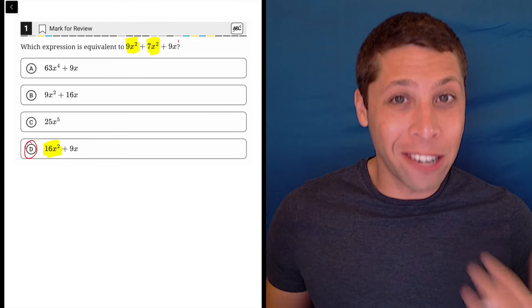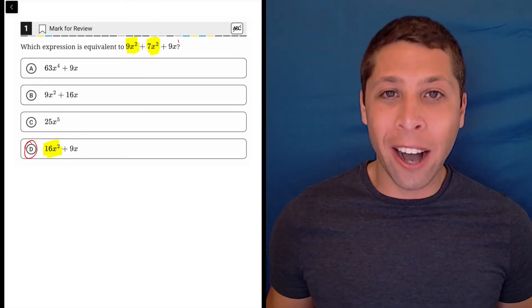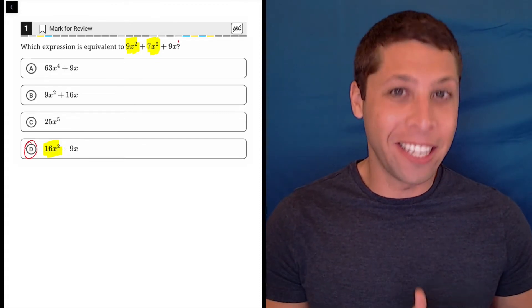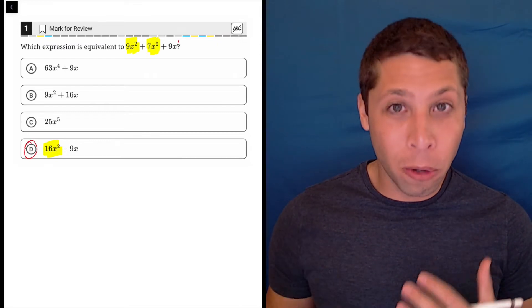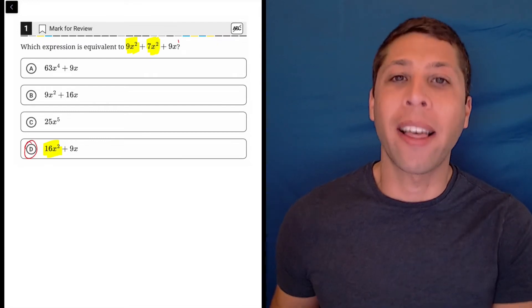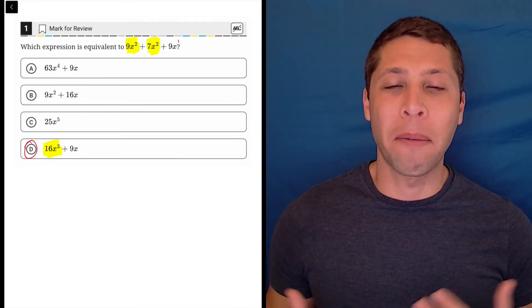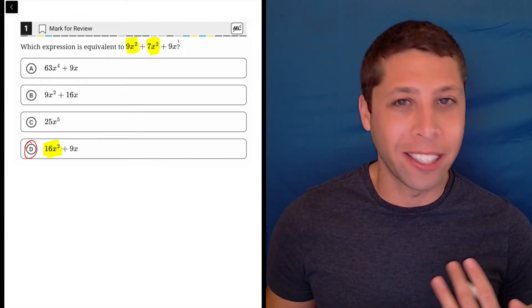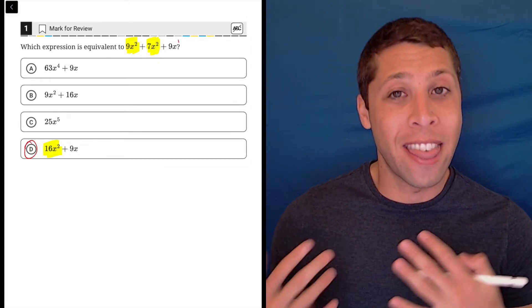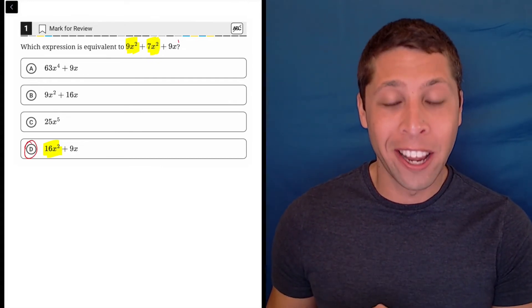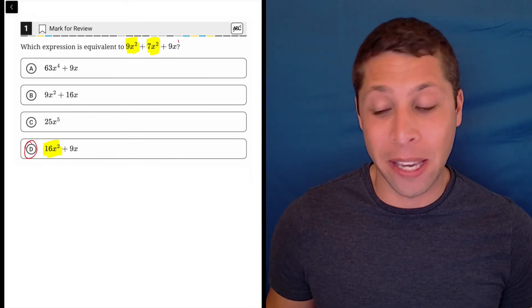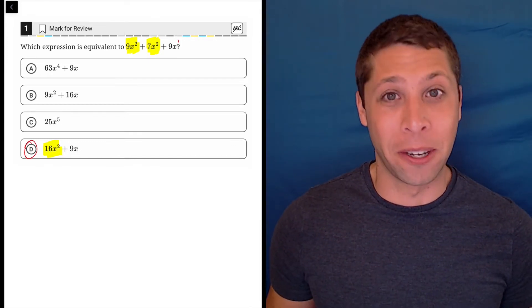Again, if you didn't know how to do this or you had any sort of doubt, then your problem is not the SAT. Your problem is algebra, so go to Khan Academy, go to a math textbook, and just practice some of the more traditional algebra like combining like terms and solving equations. That is probably where you need to start if you're struggling with this kind of stuff because the SAT is only going to get harder from here.